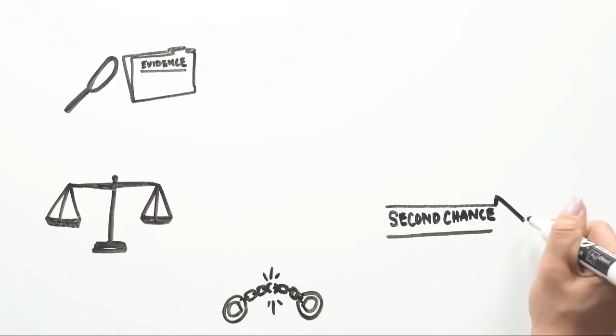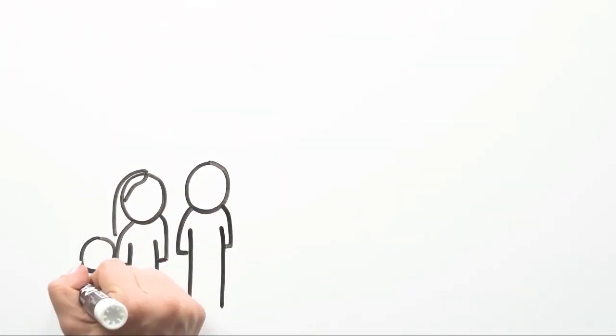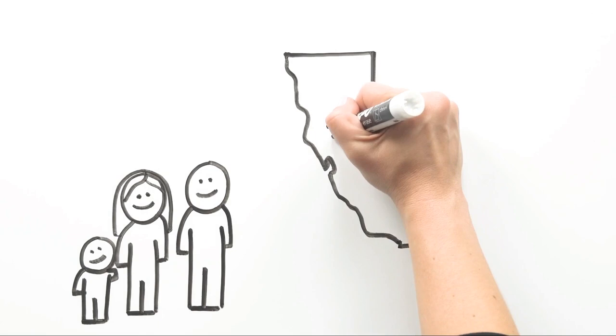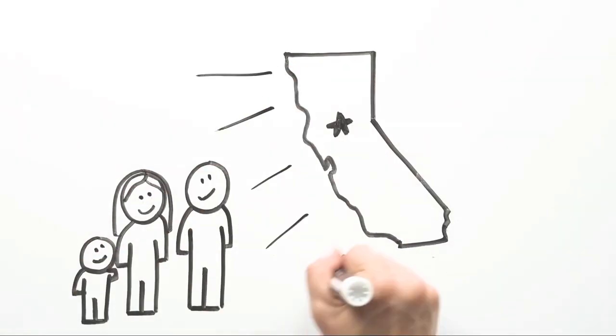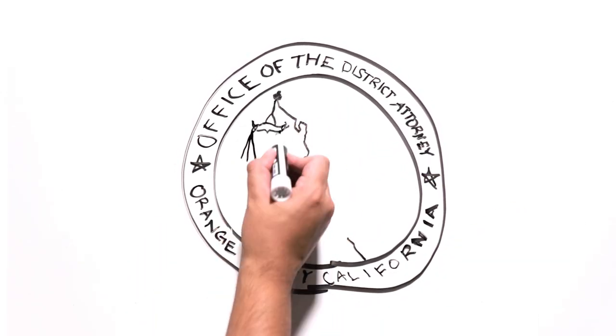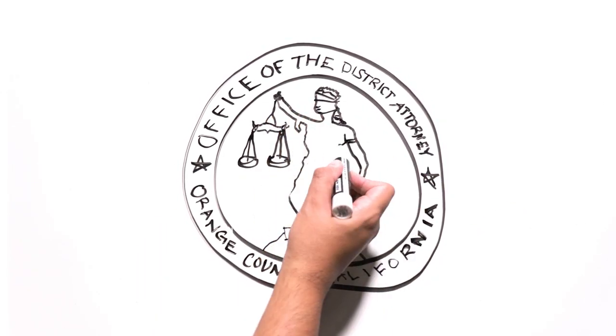We do all of this on behalf of you, the people. And we're accountable to you, and to the laws of the state of California. Those laws are always changing to keep criminal justice priorities in line with changes in society and technology. We embrace reform, but we'll always work to make sure change happens in a way that continues to keep our neighborhoods and you safe.